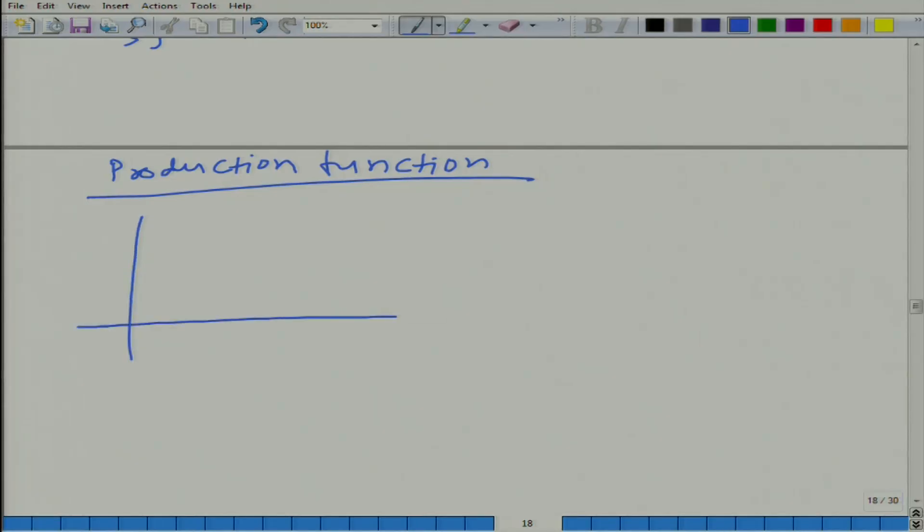Now we have drawn a graph where we have one input and we have one output. Now let us say what if, because I said that production function we will do when we have only one output.